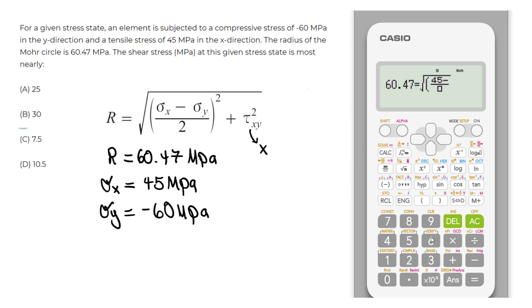And sigma y is negative 60. So we do minus negative 60. So we do negative 60. And that is divided by 2.